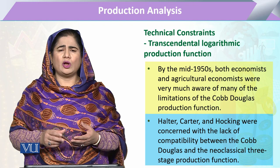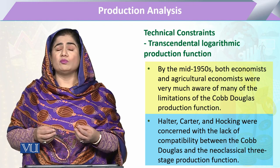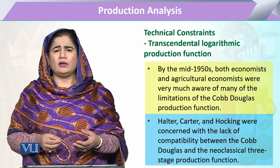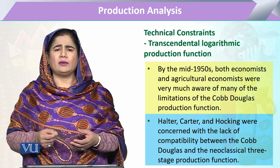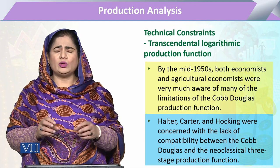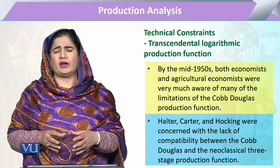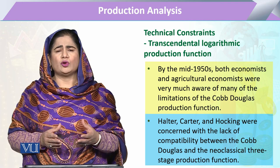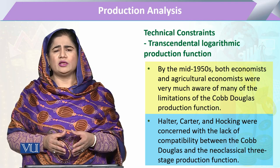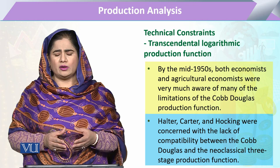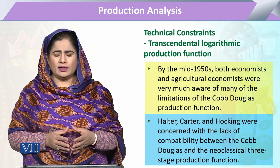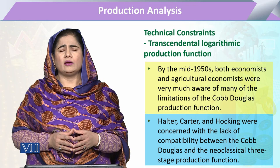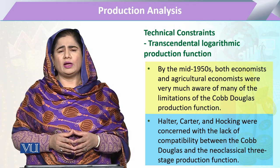Labor productivity is mostly expressed in the form of hours — for example, 2 units per hour, 4 units per hour. Given these problems that were observed, some economists — Halter, Carter, and Hawking — were working on improvements.